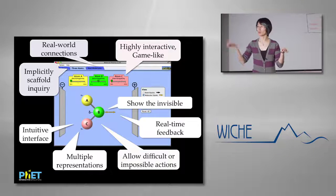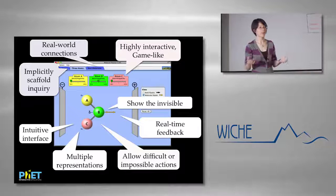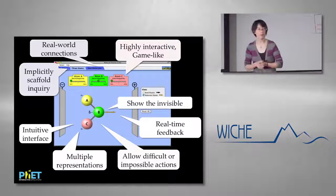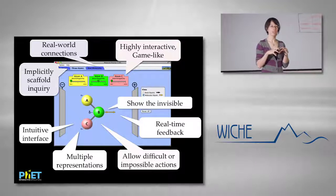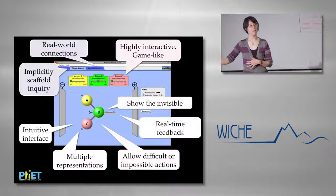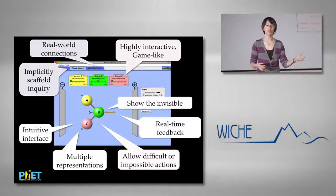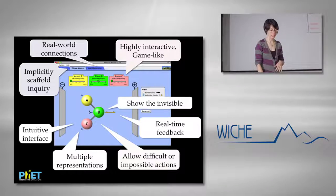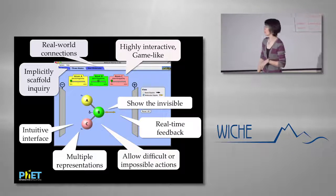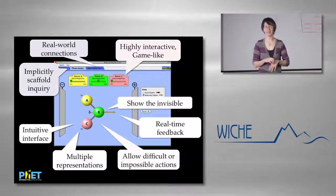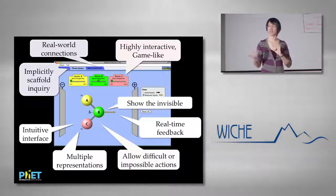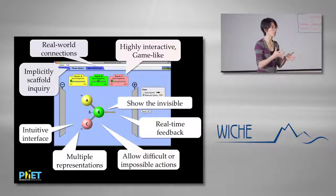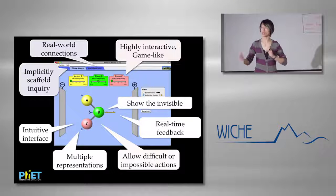Where pedagogically relevant, we allow for difficult or impossible real-world actions. In molecule polarity, you can adjust the angle between all your atoms and the electronegativity of each individual atom — neither of which is possible with real molecules or atoms. But we want that because we're focusing in on how those parameters affect molecule polarity. For things like color vision, it's hard to switch between different light sources and play with filters in real life, but here you can do that very easily. We also use multiple representations — Color Vision shows both a photon and a beam representation of light.